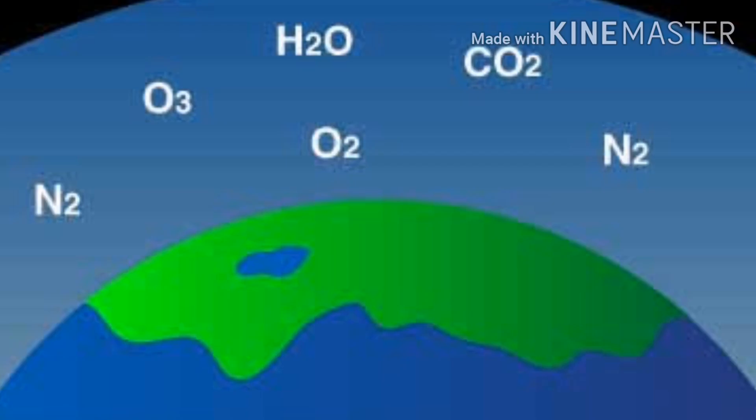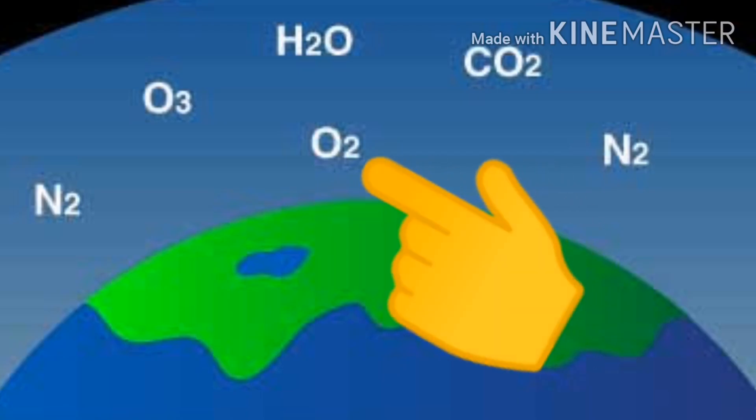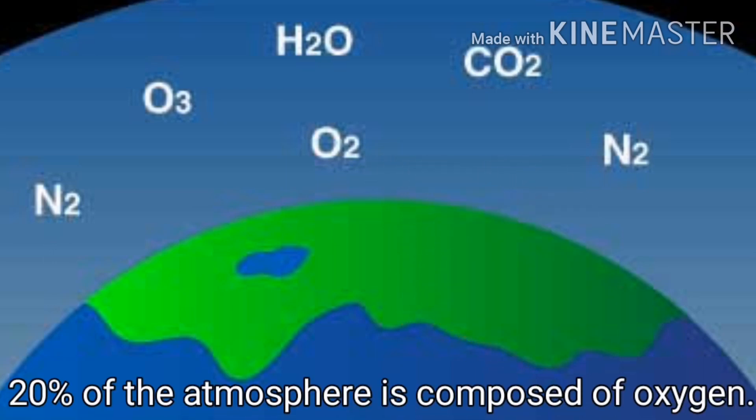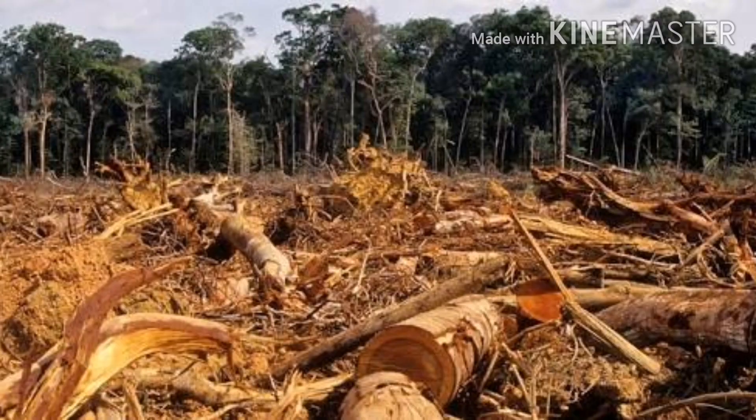Oxygen is then released into the atmosphere. That is why 20% of the atmosphere is composed of oxygen. Kung sa kasalukuyang panahon, mayroong 20% ng atmosphere ay oxygen. Ano kaya ang mangyari kung ang mga halaman at mga puno na nagbibigay nito ay patuloy na mauubos? Pag-isipan.